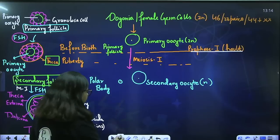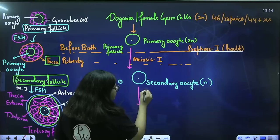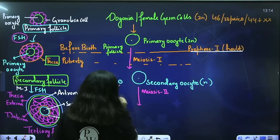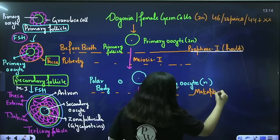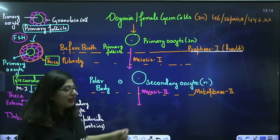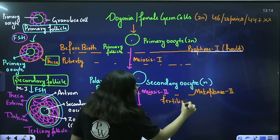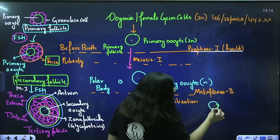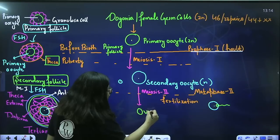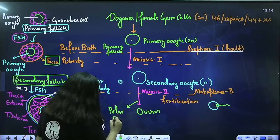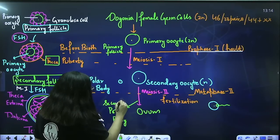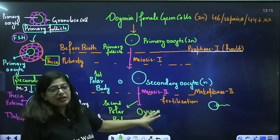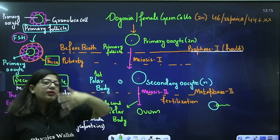Meiosis II has been started here but again got stuck — at metaphase II. This meiosis II will only be completed when fertilization happens. When the secondary oocyte receives the sperm, only then a trigger occurs and the secondary oocyte gets converted into the ovum and the second polar body. Again the division is unequal. This stage only occurs when a female gets pregnant or fertilization has occurred. In most females, only the secondary oocyte is formed and later it degenerates.